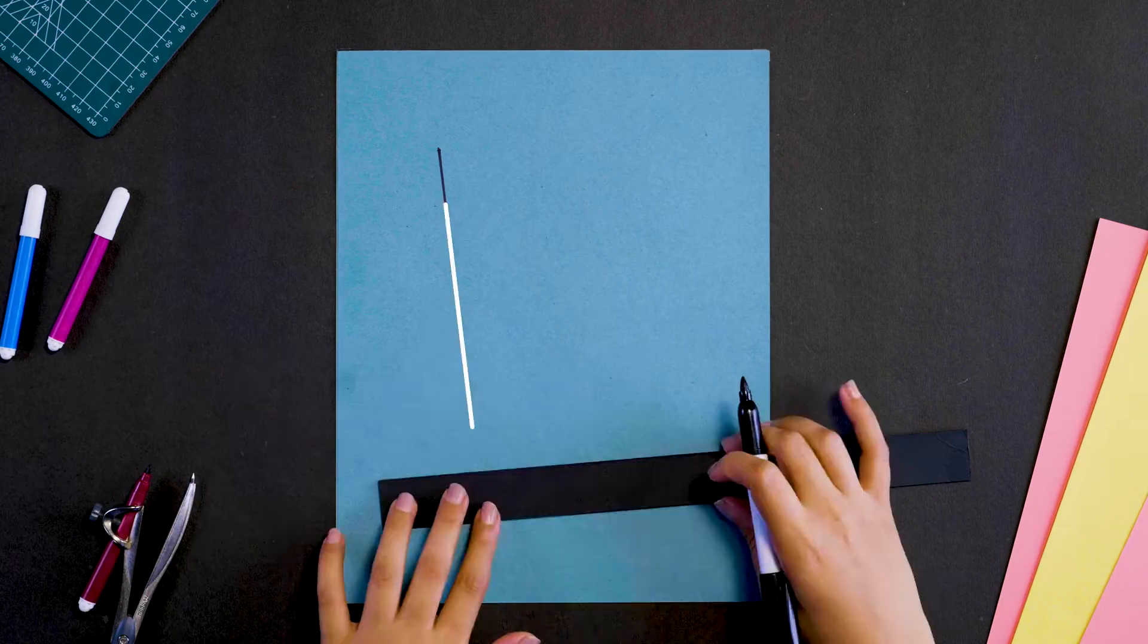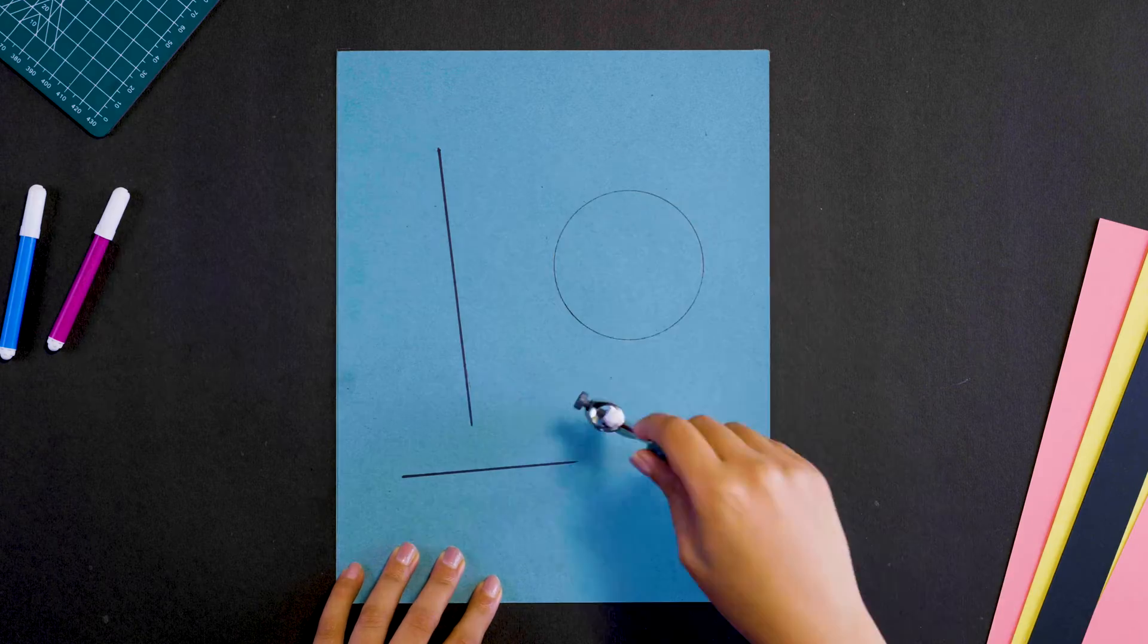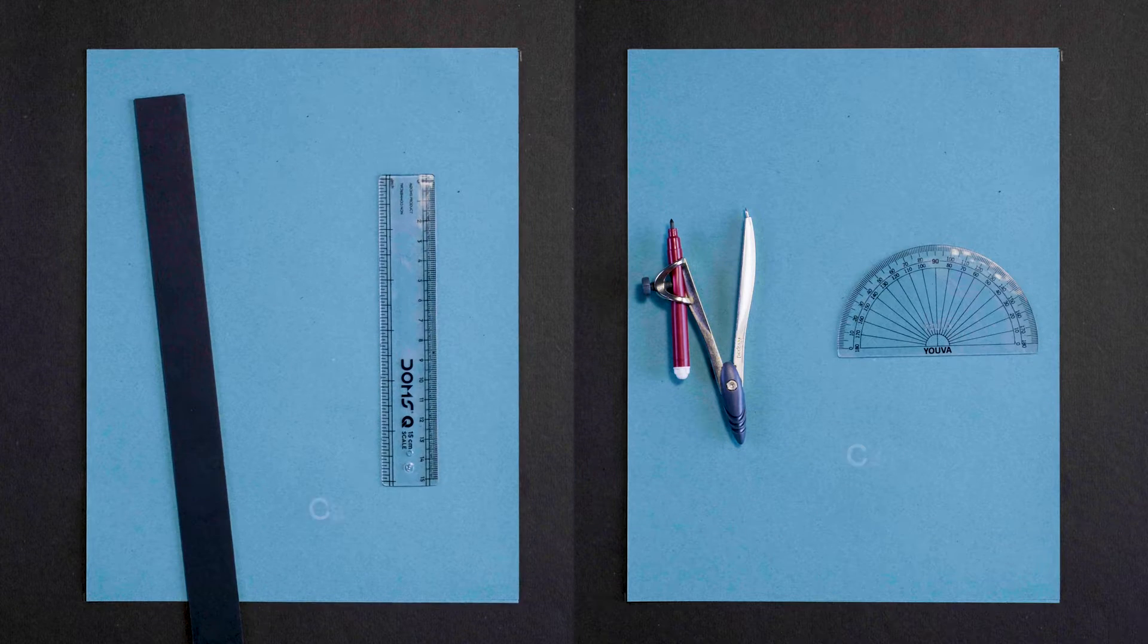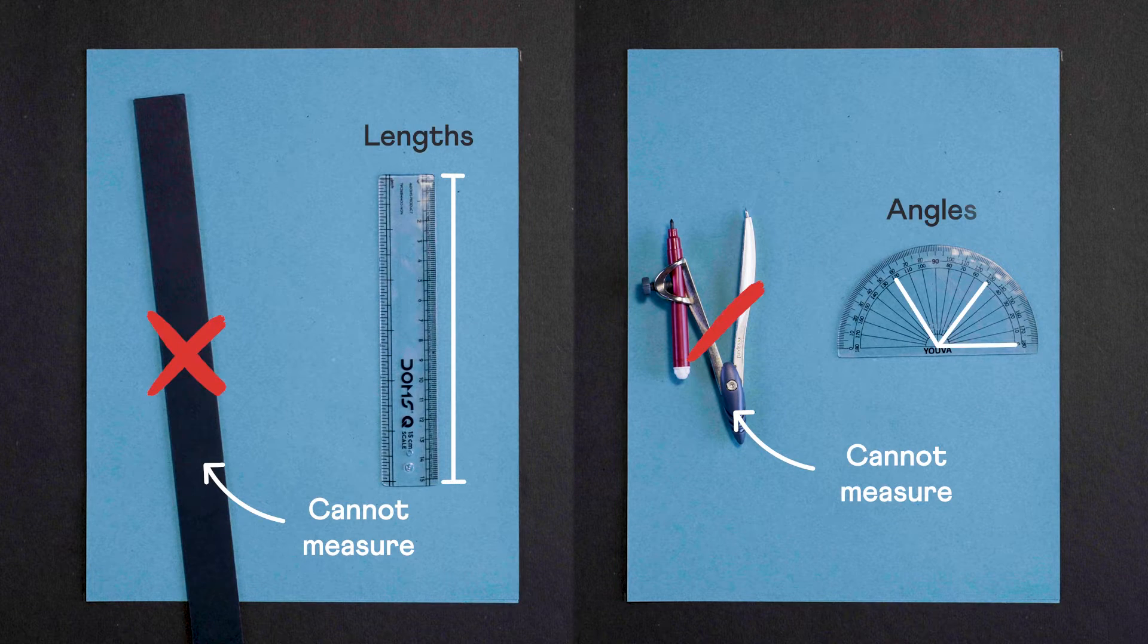But before that, let me tell you something about these tools. Using a straight edge, you can draw only straight lines. And using a compass, we can make circles and arcs. You cannot use them to measure lengths or angles.